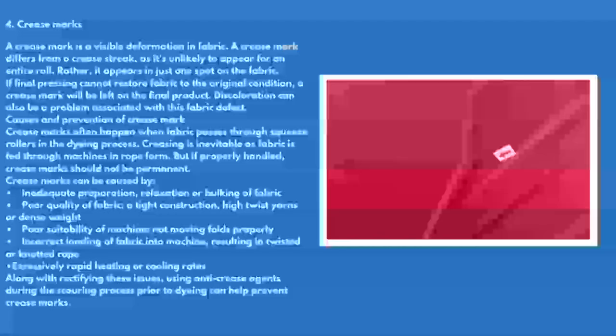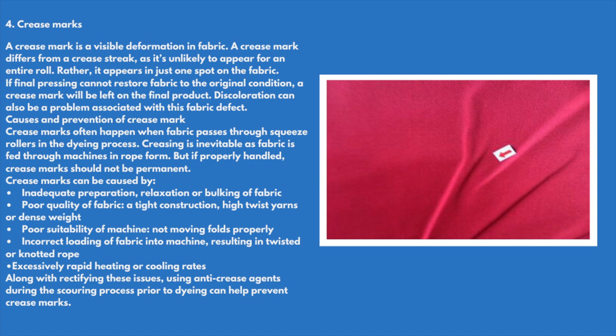Crease marks: a crease mark is a visible deformation in fabric. A crease mark differs from crease streaks in that it is unlikely to appear for an entire roll; rather, it appears in just one spot of the fabric. If final pressing cannot restore the fabric to its original condition, a crease mark will be left on the final product. Coloration can also be a problem associated with this defect.